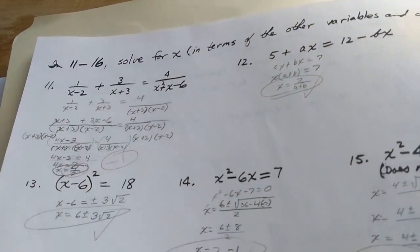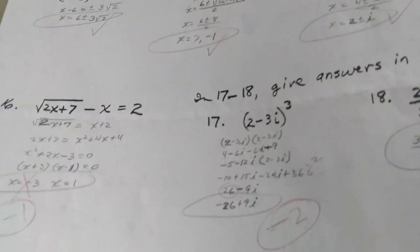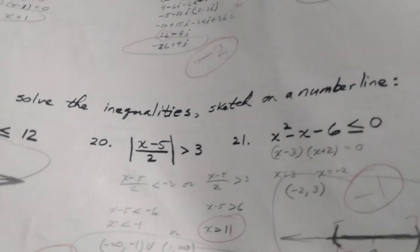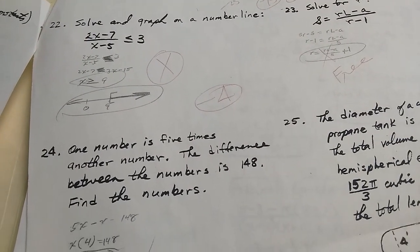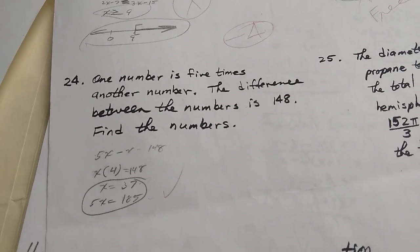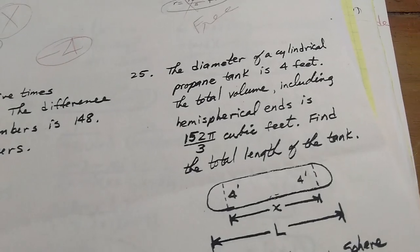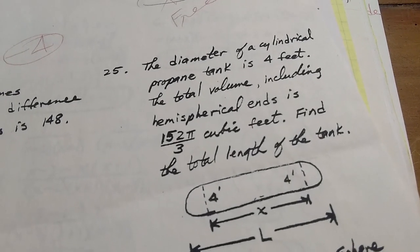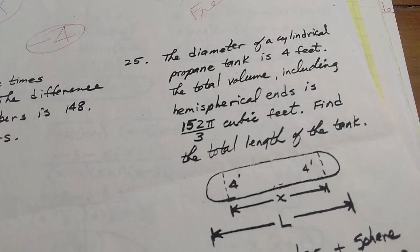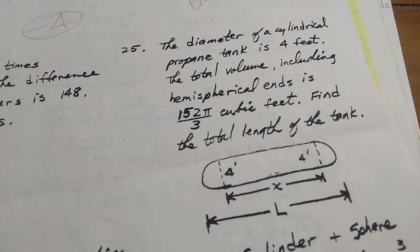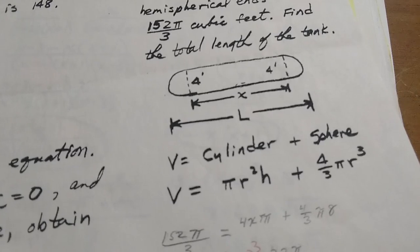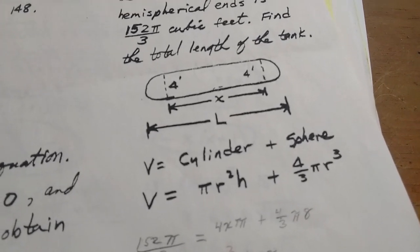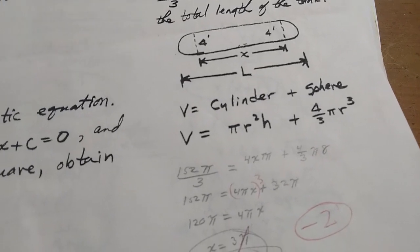Let's keep going and look through this a little bit more. We have more solving equations, some inequalities, nothing too special. More inequalities, a word problem. Not too difficult. What is this? The diameter of a cylindrical propane tank is 4 feet. The total volume, including hemispherical ends, is 152 pi over 3 cubic feet. Find the total length of the tank.